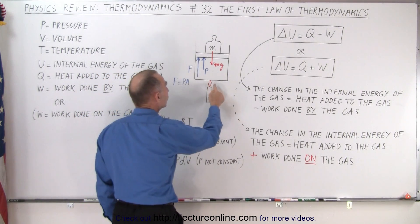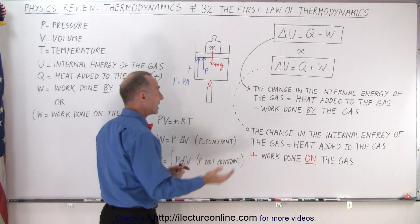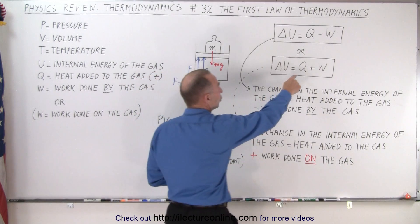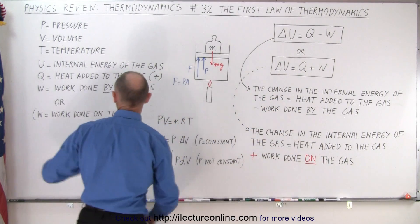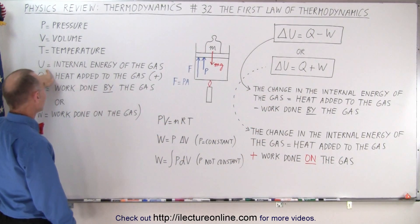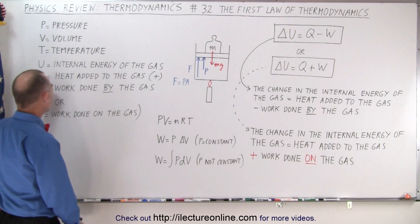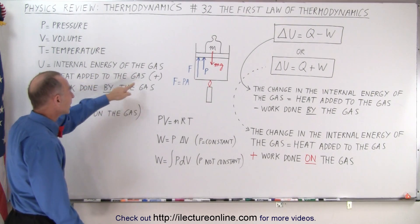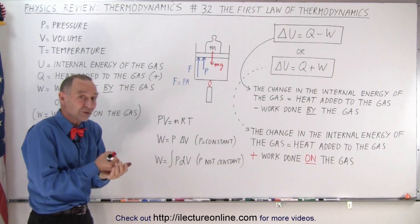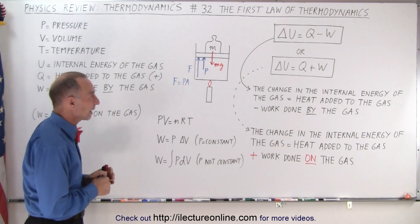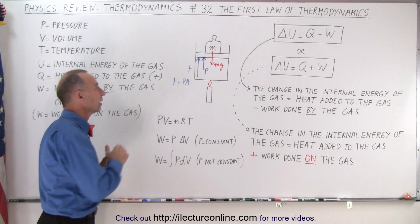Now what happens when we add heat to the gas? When we add heat to the gas, that means that Q is positive. U represents the internal energy of the gas, and Q represents the heat added to the gas when it's positive. When Q is negative, you're removing heat out of the gas.